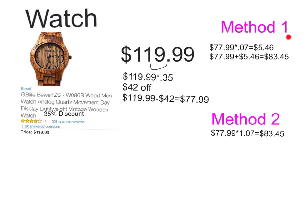Now you're going to calculate sales tax, the same method as the previous two items, but I will still show you. For the first method, you're going to take $79.99 times .07, which gives you a sales tax of $5.60. So then you're going to add $5.60 to your $79.99, which gives you $85.59.